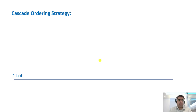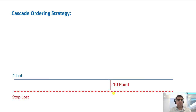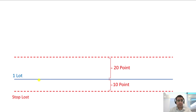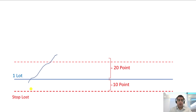Normally when we open an order based on any strategy and we enter the market, we have a stop loss — for example 10 pips lower than the entry point. And if the risk-reward is 2, we put the take profit 20 pips higher than the entry point. Whenever the price goes in our favor and hits the take profit, we close the open order. If it goes down and hits the stop loss, we close the order with a loss.